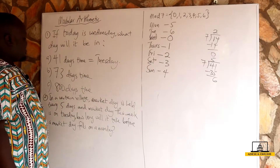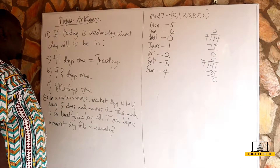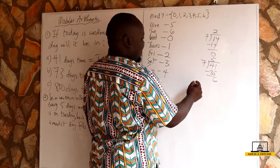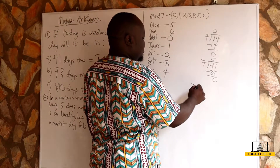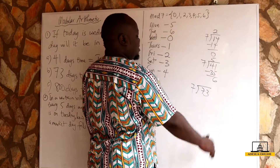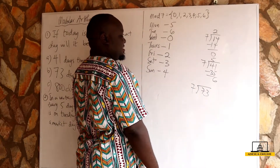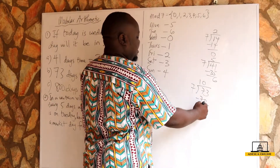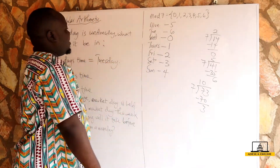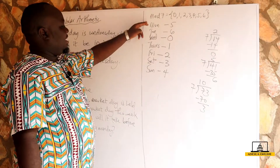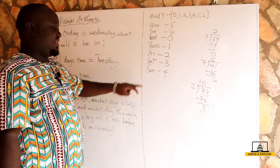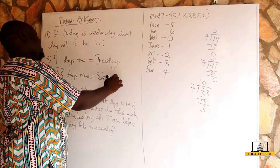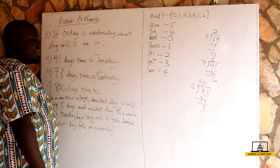What day would it be in 73 days time? Again, we divide 73 by seven. Seven goes into 73 ten times — that's 70 — so we have a remainder of three. A remainder of three tells us it will be on a Saturday.